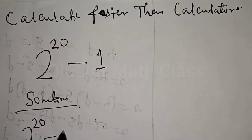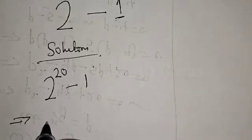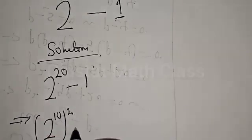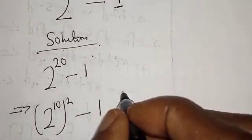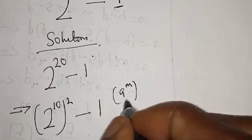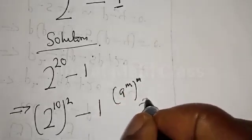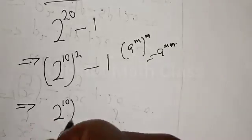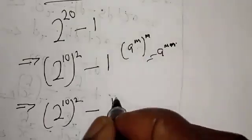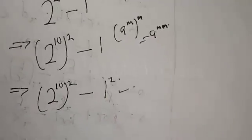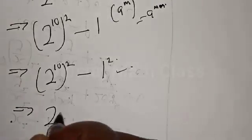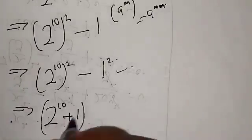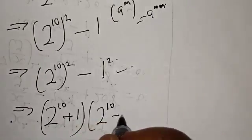2 raised to power 20 can be expressed as 2 raised to power 10, squared minus 1. That is, using the rule e raised to power m times n. This implies that we have 2 raised to power 10 squared minus 1, which is the same as A squared minus B squared, a difference of two squares. This can be expressed as 2 raised to power 10 plus 1, into 2 raised to power 10 minus 1.